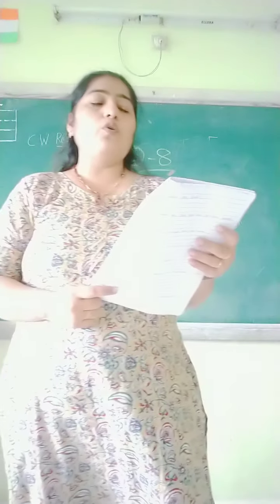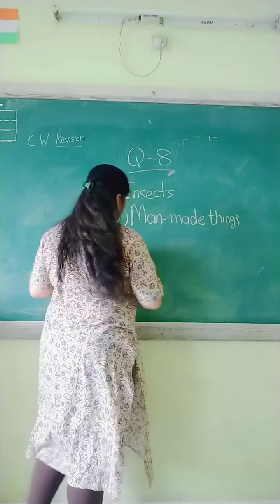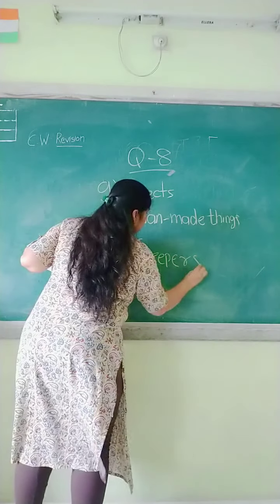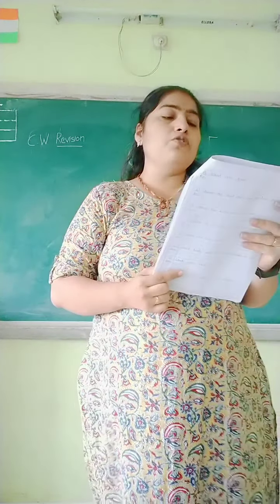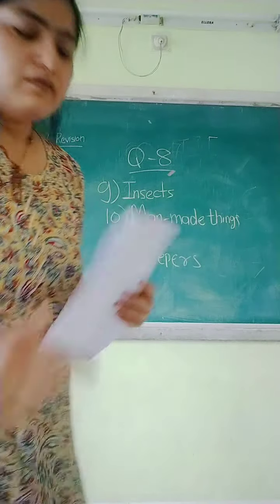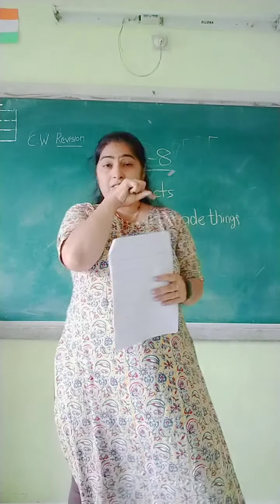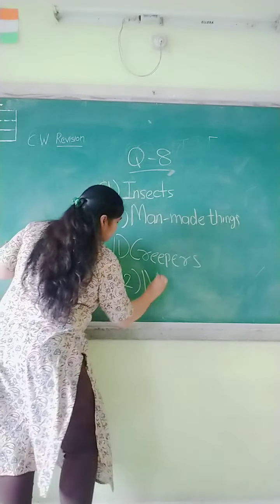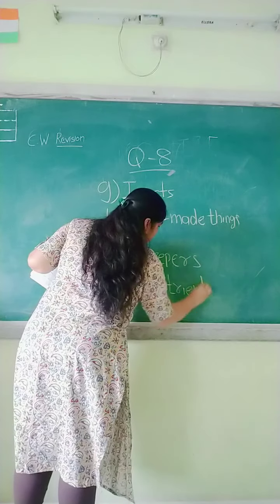Eleventh one: plants that grow along the ground — examples are watermelon and pumpkin — these are creepers. Twelfth one: useful things that plants take from the soil for growth — the answer is nutrients.